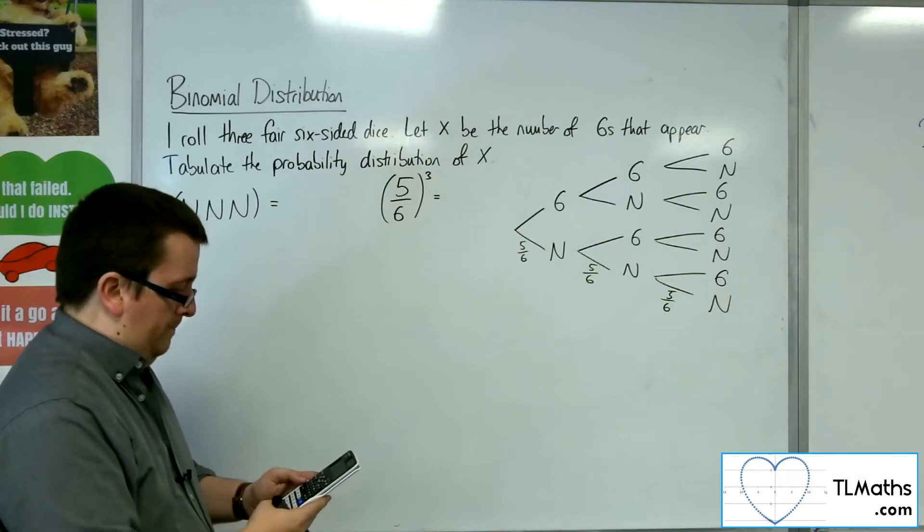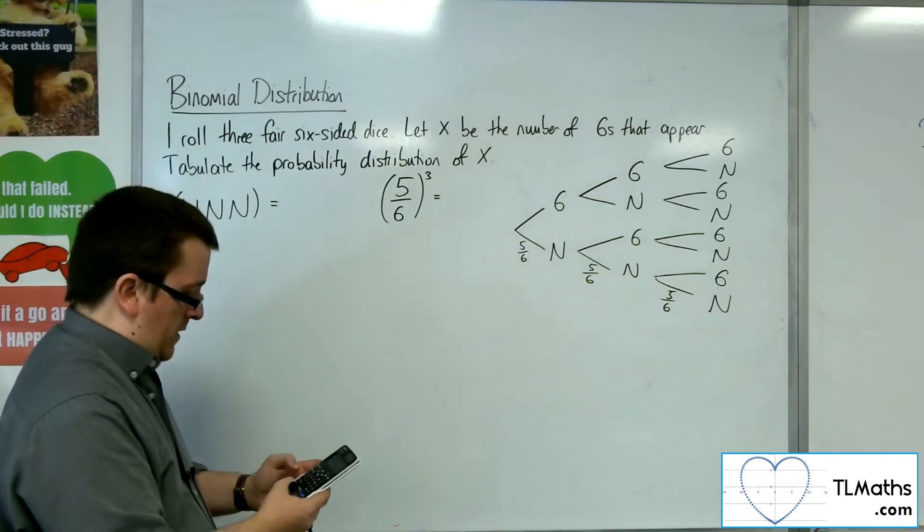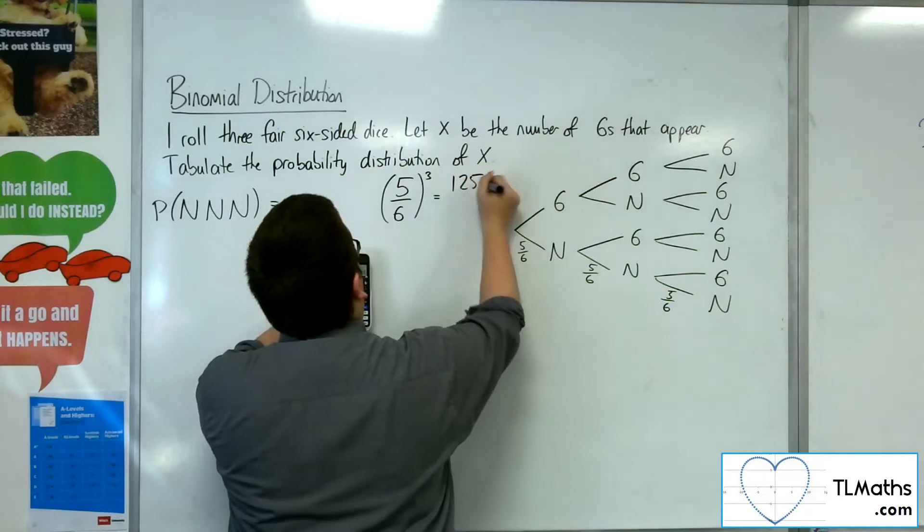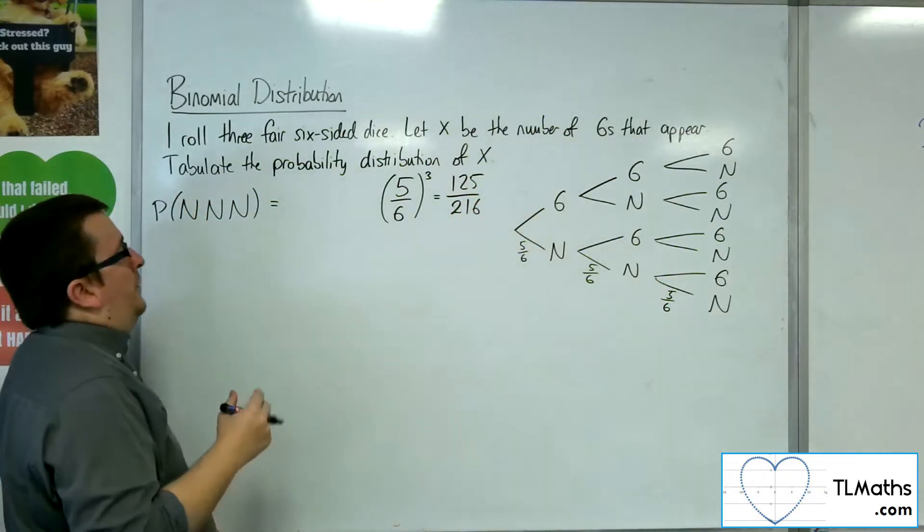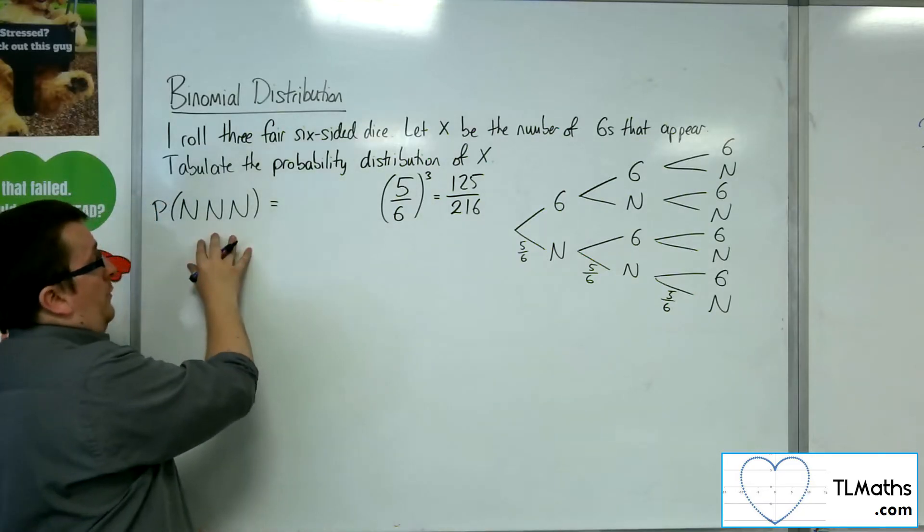So five-sixths cubed. So try that again, I was in the wrong mode. So 125 over 216. So then if we think about, if that's zero sixes appearing, then if I'm going to look at one six.